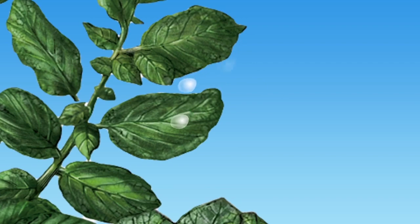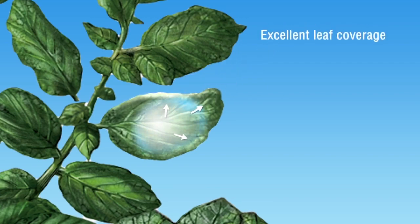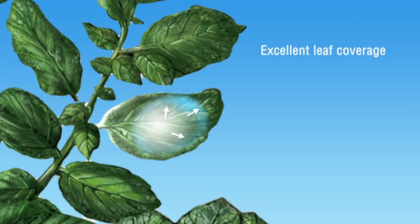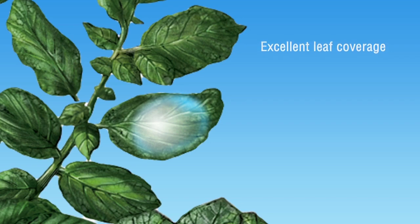When Infinito is applied to the potato plant, its state-of-the-art formulation technology ensures it spreads efficiently over the whole leaf. In this way, comprehensive leaf coverage is ensured.